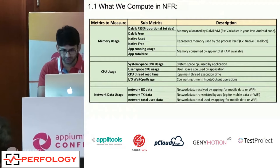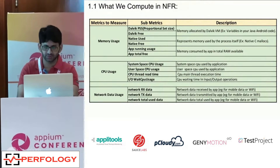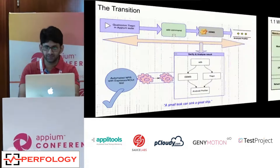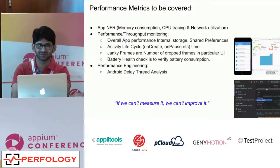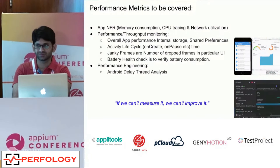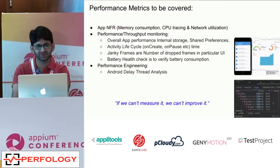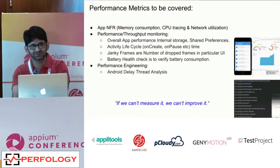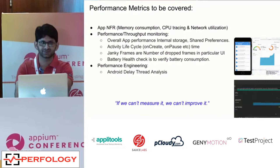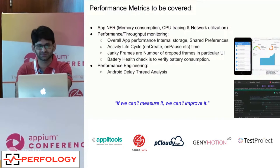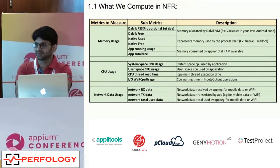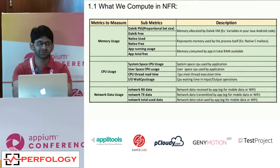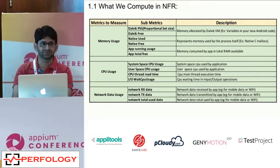Thank you Lokesh for the introduction. We have divided the whole topic into two sections: the first is performance testing, where we talk about the numbers, throughputs, and key matrices we capture; the second is performance engineering, which covers how we improve things where optimization is required. In application performance, we capture three main parameters: memory, CPU, and network data.